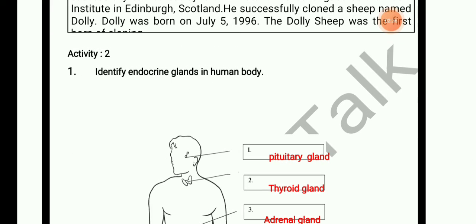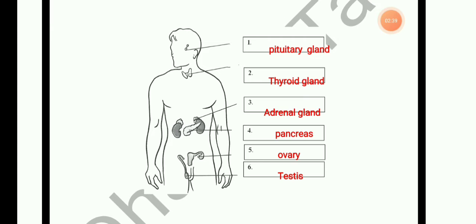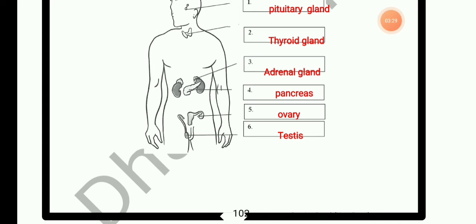Activity 2: identify endocrine glands in the human body. Pituitary gland secretes growth hormone — excess leads to gigantism, less leads to dwarfism. Thyroid gland secretes thyroxin hormone. Adrenal gland secretes adrenaline hormone. Pancreas secretes insulin. Ovaries secrete estrogen and progesterone. Testes secrete testosterone.